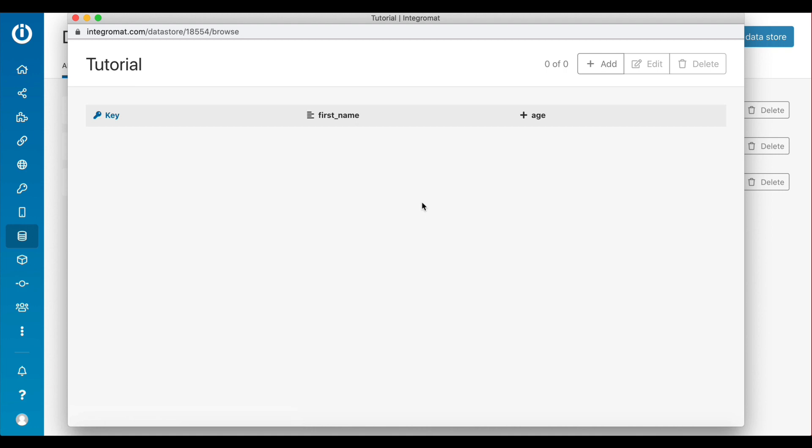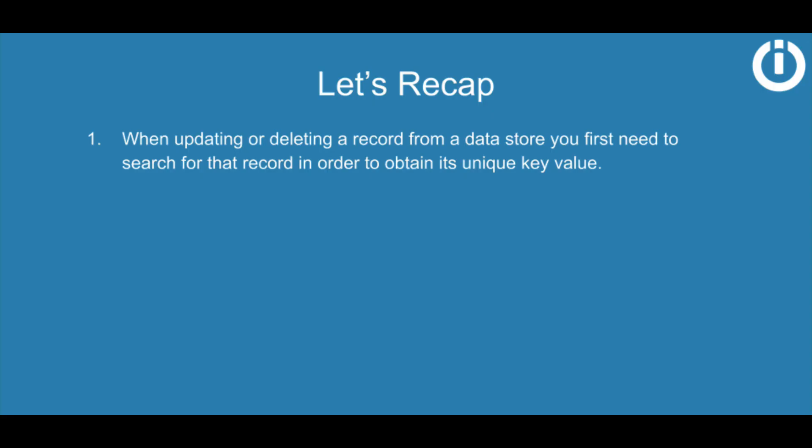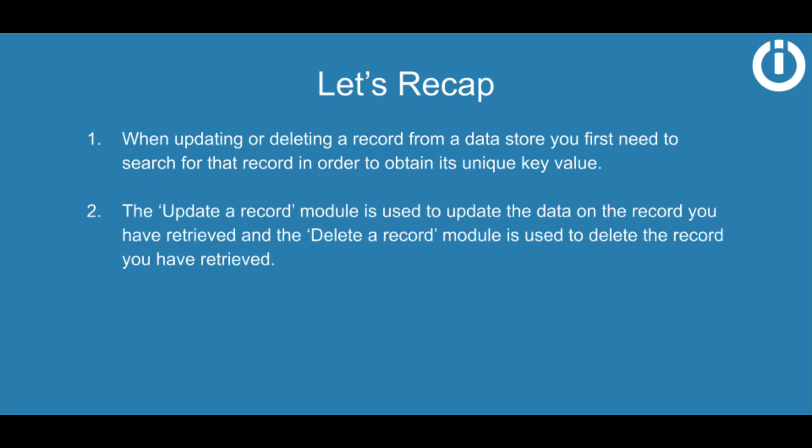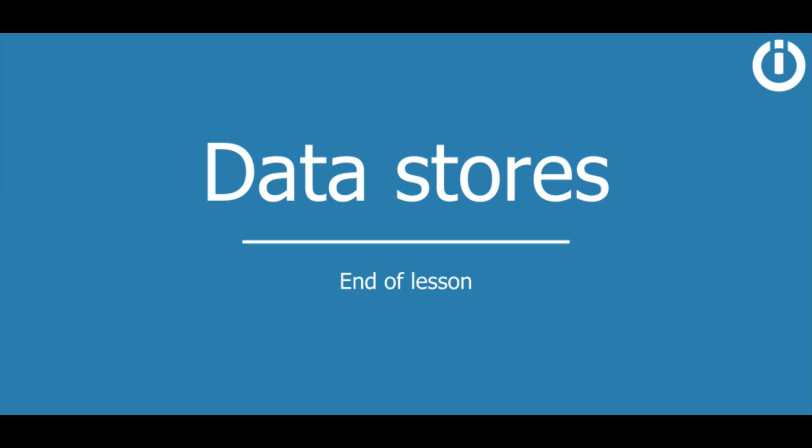That brings us to the end of this lesson. Here's a quick recap: when updating or deleting a record from a data store, you first need to search for that record in order to obtain its unique key value. The 'Update a Record' module is used to update the data on the retrieved record, and the 'Delete a Record' module is used to delete the retrieved record. This concludes the course on data stores — hope you learned something new, see you in the next one.